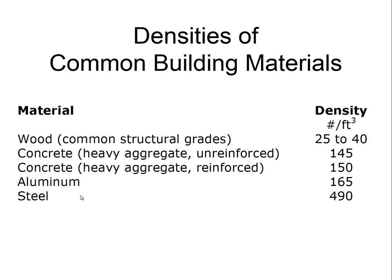Here are some of the densities of common building materials. Wood — the common structural grades range from 25 pounds per cubic foot to 40 pounds per cubic foot. Most structural grades are actually in the range of 25 to 35, and we only get up around 40 pounds per cubic foot when dealing with something like particle board, which is densely impregnated with plastics or glue.